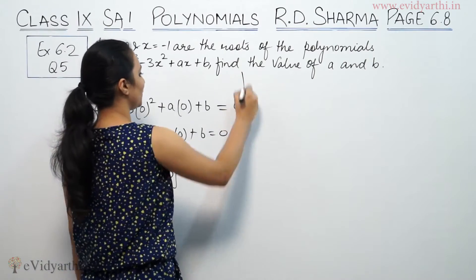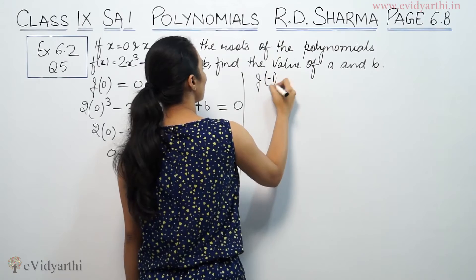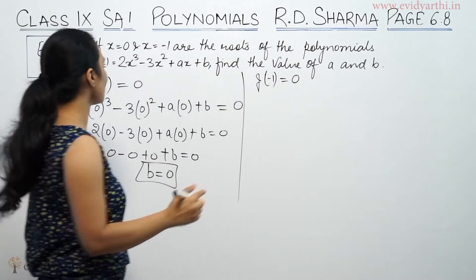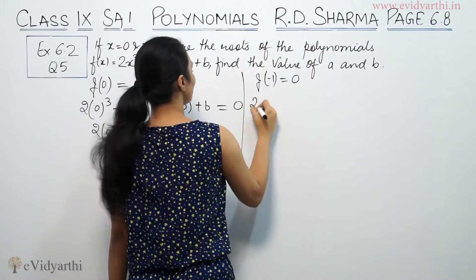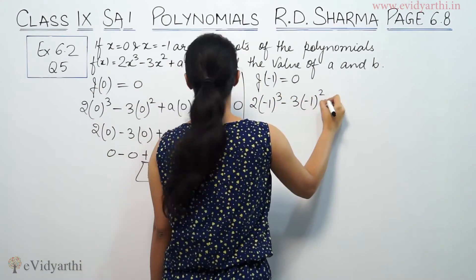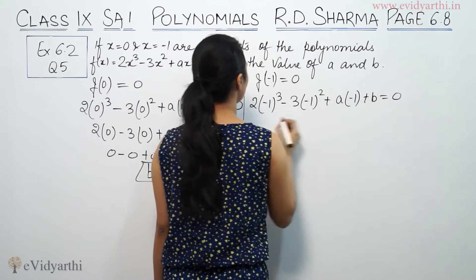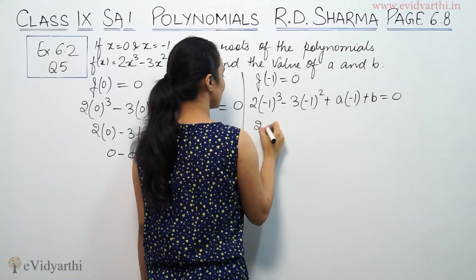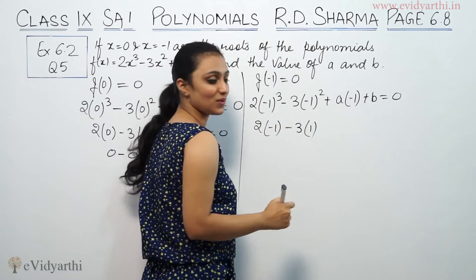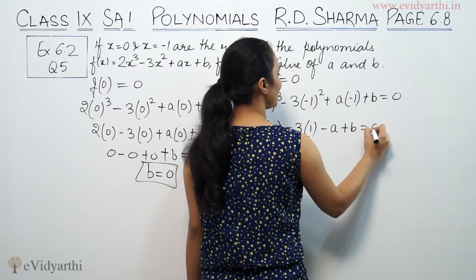Now for x equals minus 1, we put x equals minus 1, and this should be equal to 0. So: 2×(minus 1)³ minus 3×(minus 1)² plus a×(minus 1) plus b equals 0. Since (minus 1)³ is minus 1 and (minus 1)² is 1, this gives minus 2 minus 3 minus a plus b equals 0.